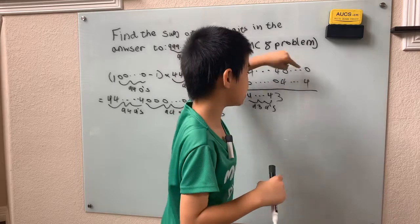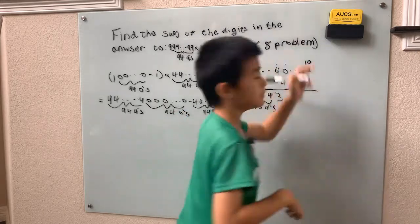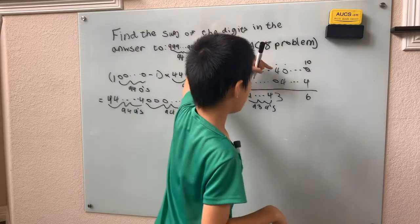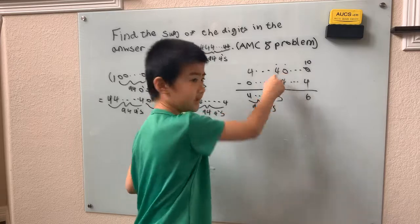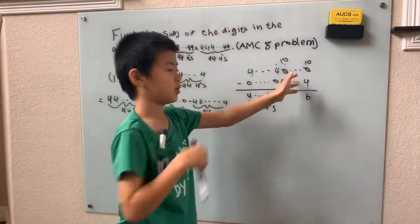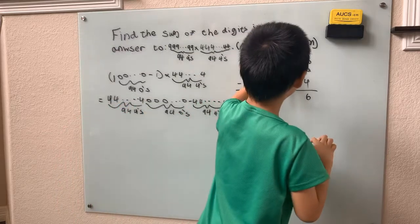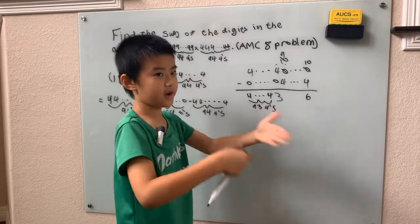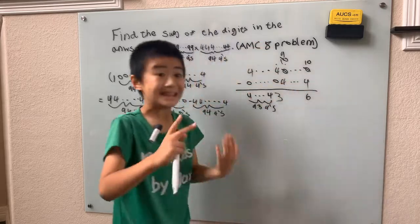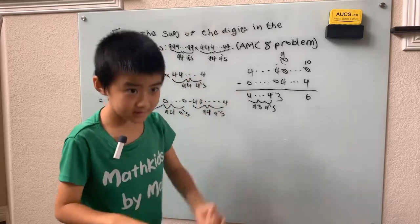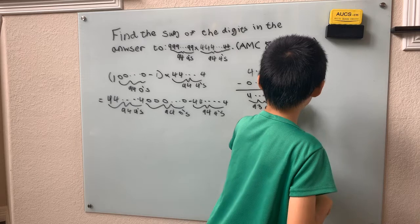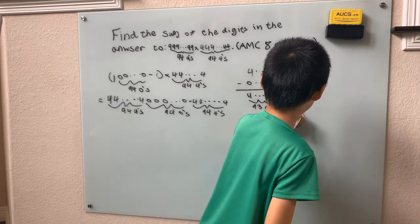The borrowing chain turns digits into 10s, and 10 minus 4 gives us 6 — that's our units digit. Then we still need to borrow for the next 0, so that digit changes into a 9, and we get 9, 9, 9... a whole run of 9s across the 94 zeros section. We end up with 93 nines, and 9 minus 4 gives 5 for each, so we get 93 fives. What fits in the middle section is 93 fives.